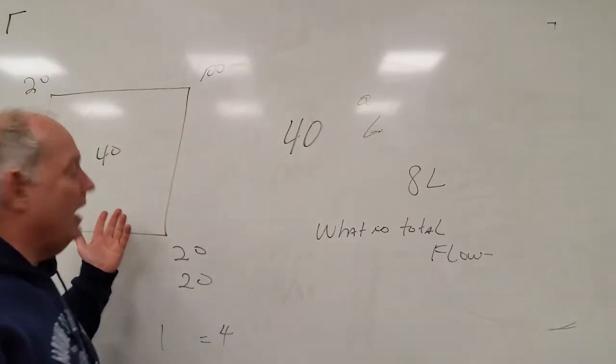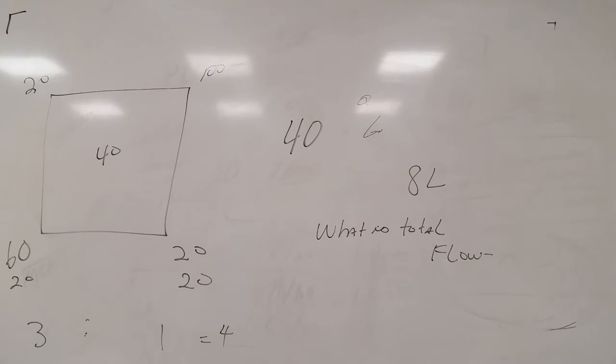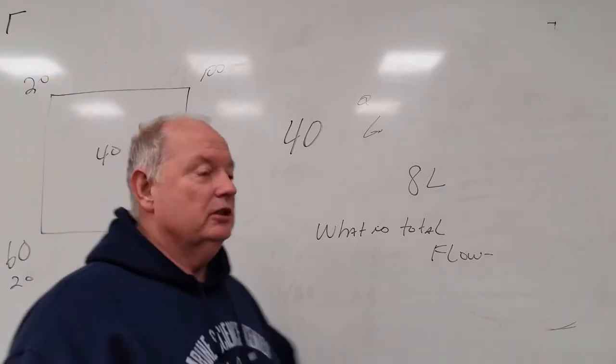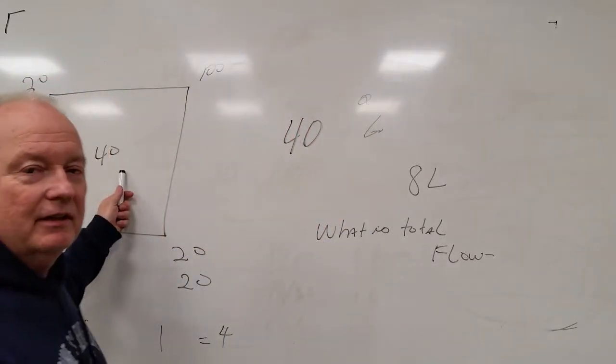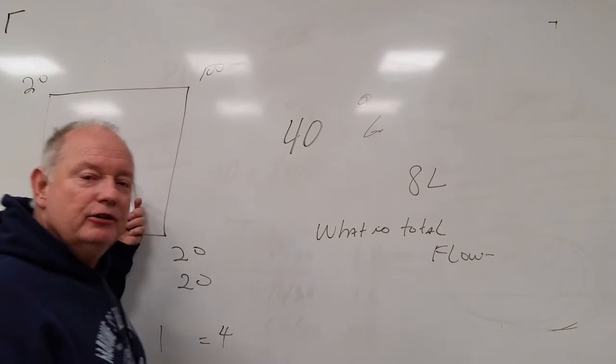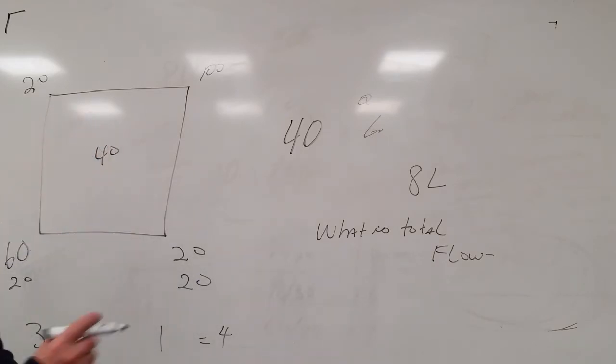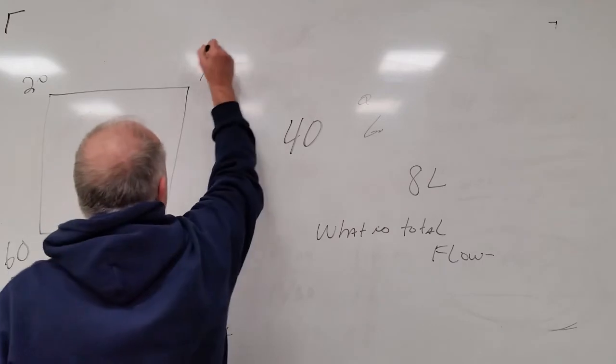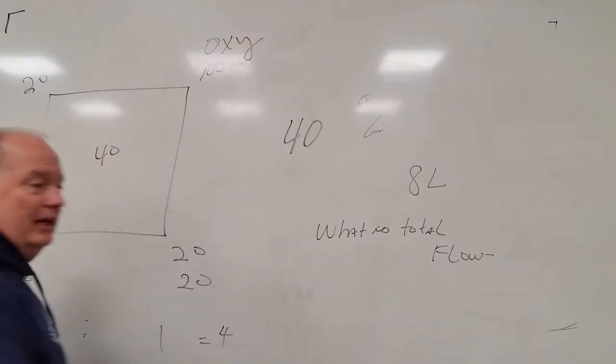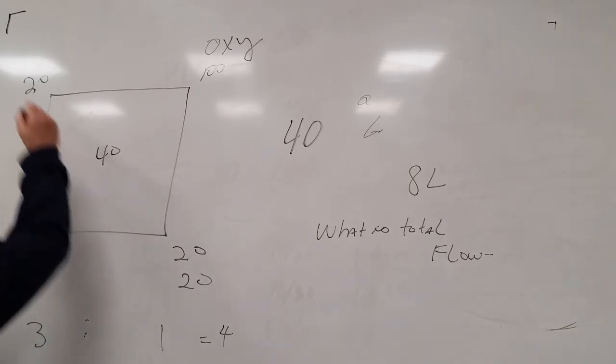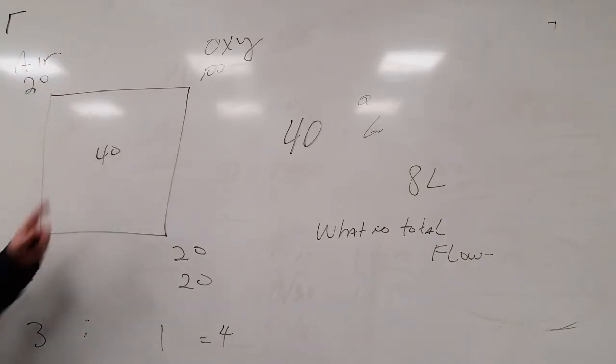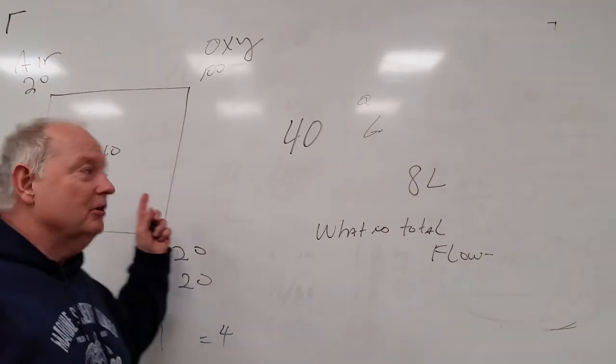And you can use the magic box. Your desired FIO2 goes in the middle. Your oxygen goes up to one side, pick whichever one you want and label it 100%. Your air goes up to the other side, pick whichever side you want but label it.